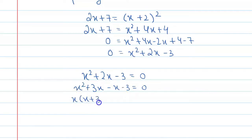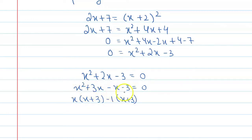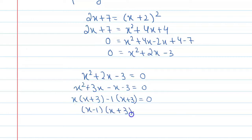We have x and x plus 3. In the first two terms we have x common, and in the next two terms we have minus 1 common, giving x plus 3. We have 4 terms total: in 2 terms x is common, in 2 terms minus 1 is common. Now it becomes x minus 1 times x plus 3 equal to 0.